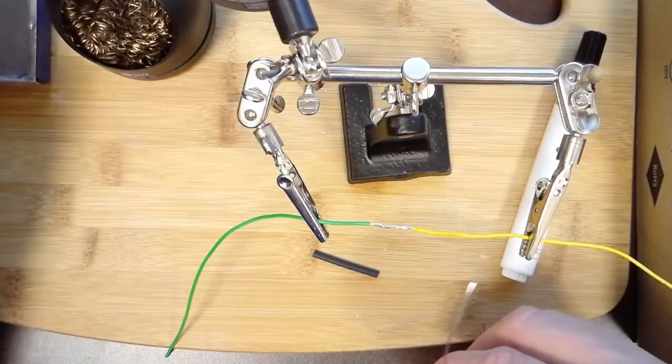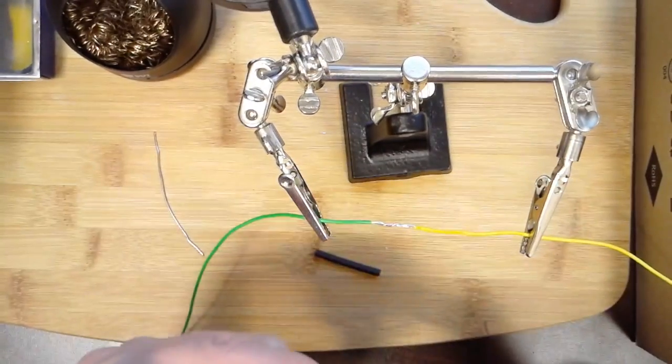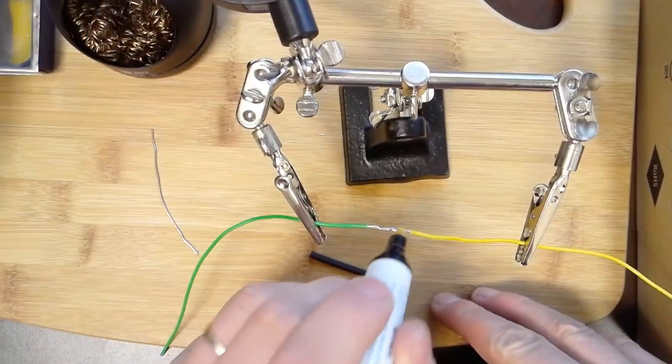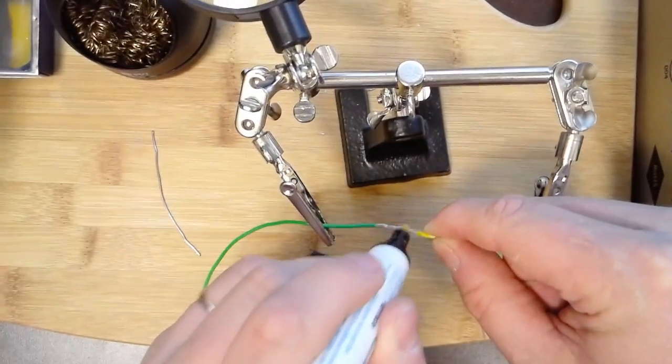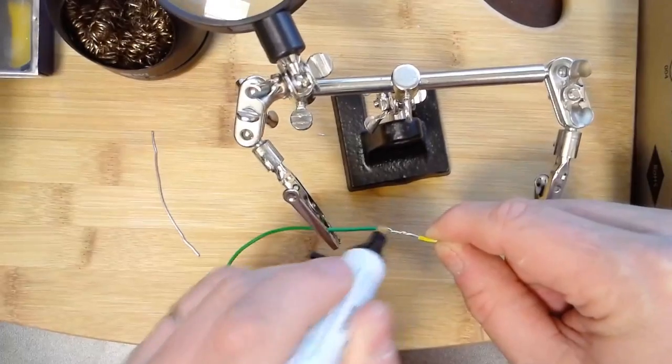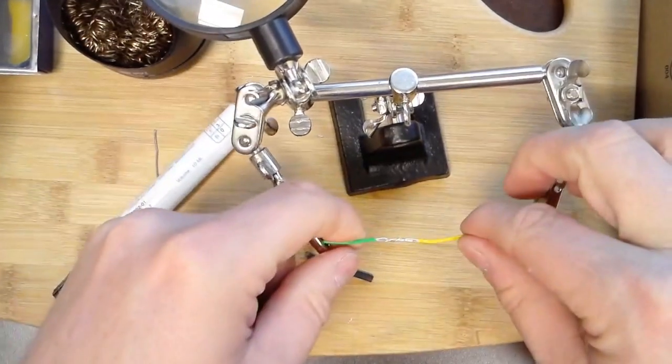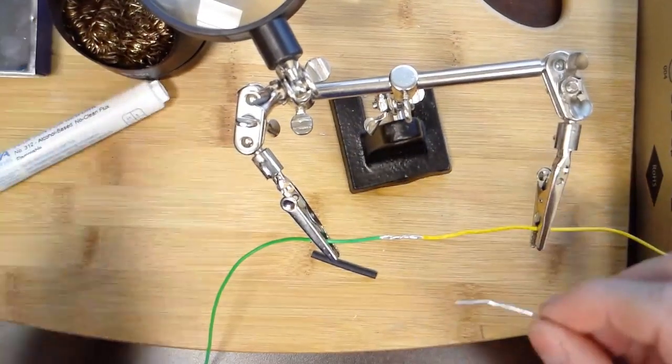For this job, I'm going to try my flux just to help the solder flow a little better. This would probably be more important with stranded wire, but the concept is the same. If I get a little bit of flux on there, that solder will flow around my joint. I want a good joint with solder all the way around it.